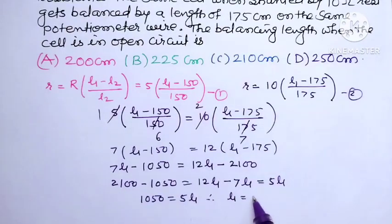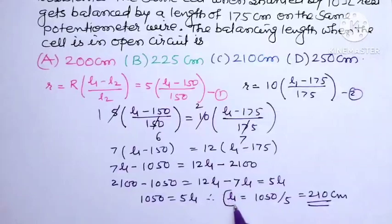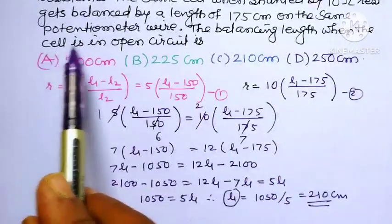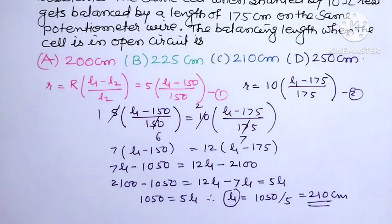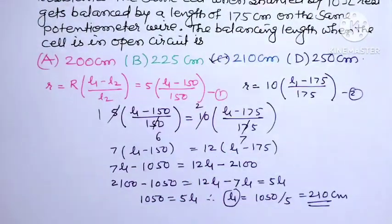Therefore, L1 equals 1050 divided by 5, or it is equal to 210 centimeter. Here this L1 itself is the balancing length when the cell is in open circuit, means when EMF of the cell is balanced. So the correct option for this question is C, that is 210 centimeter.